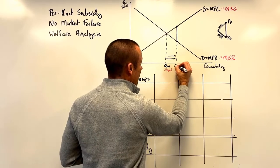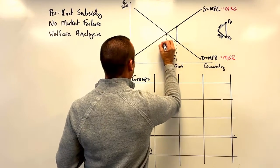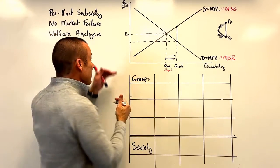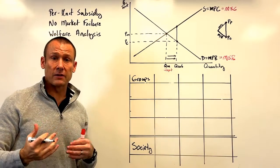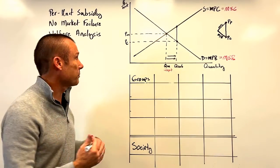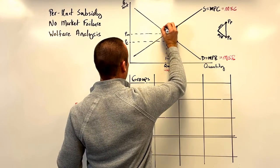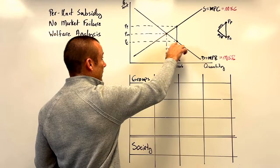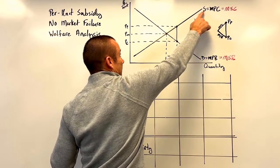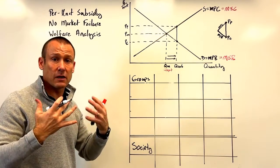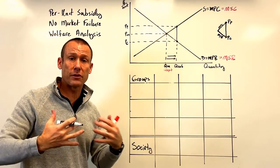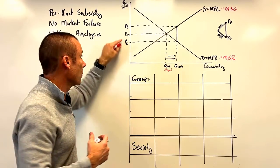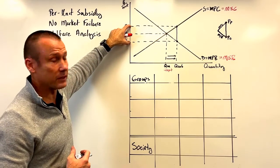Sliding that subsidy wedge in increases quantity supplied and quantity demanded by the same amount, out to Q-subsidy. The price to the consumer goes down — Pc falls, so consumers benefit. Reading off the supply curve at Q-subsidy gives us Pp. A per unit subsidy increases per unit revenue to the producer, so both consumers benefit by their cost going down and suppliers benefit by their per unit revenue going up.